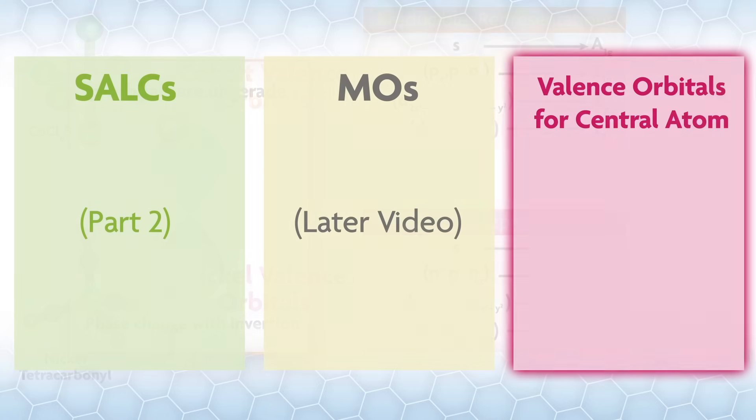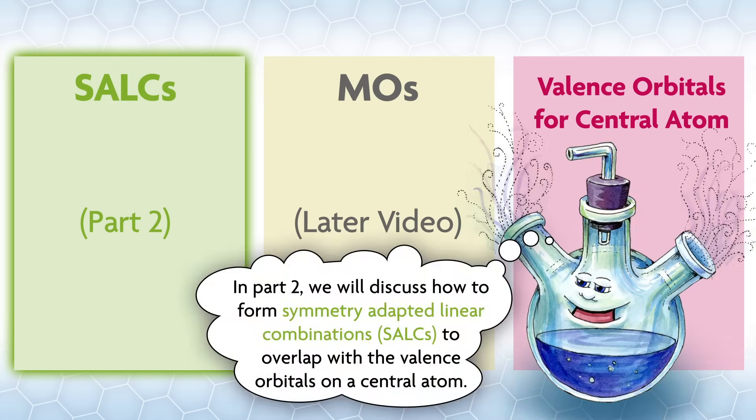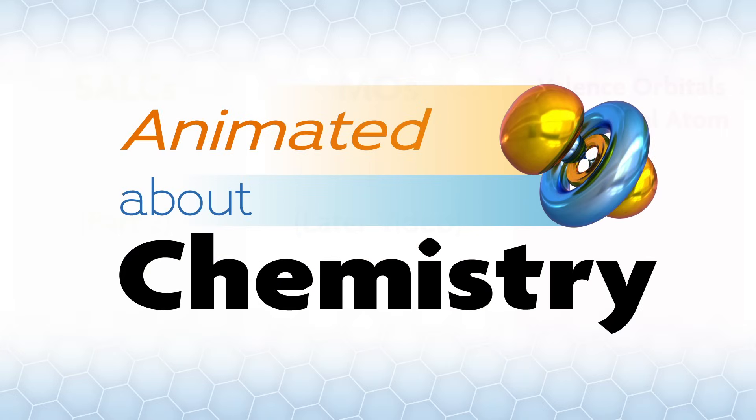In this video, we try to give you an idea of what a representation is, at least in the context of MO theory, and we found the valence orbital symmetries for a central atom. In part two, we will discuss how to form symmetry adapted linear combinations to overlap with the valence orbitals on the central atom. If you enjoyed this video and want to support future videos covering topics like this one, please subscribe to our channel and give us a thumbs up. We make these videos for fun and as a way of interacting with and giving back to the community, so we greatly appreciate your support.